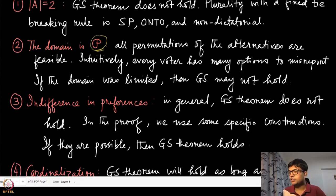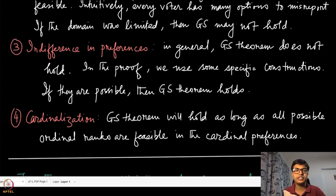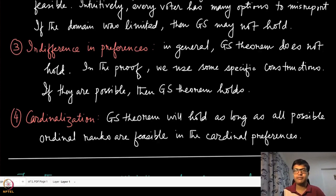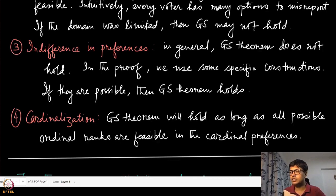The third observation is about indifference. We have so far discussed strict preferences, but you can generalize to include indifferences. If you expand the preference domain, those constructions already exist there, so GS theorem will continue to hold. But if you have removed some of the strict preferences being considered, then possibly GS theorem won't hold — so it all depends on the domain.